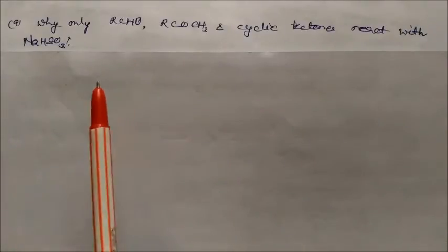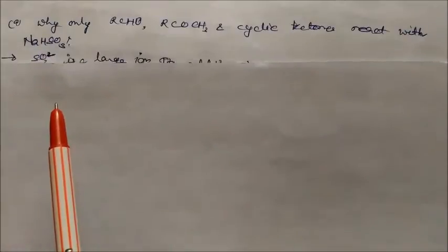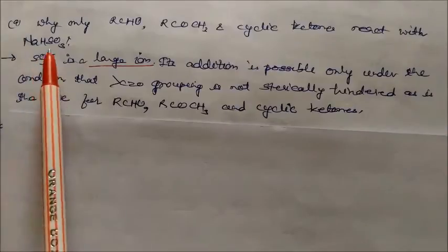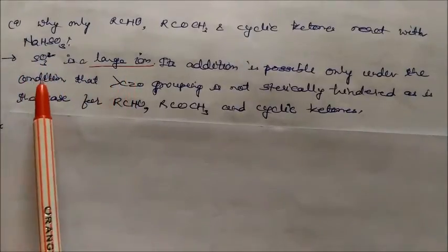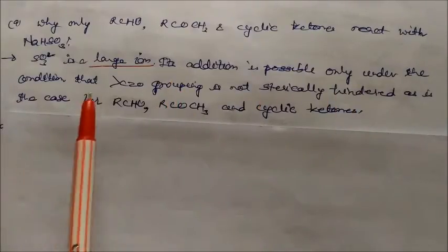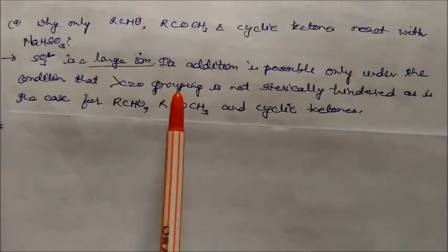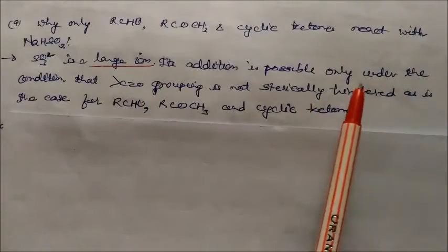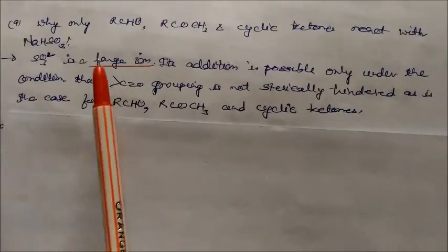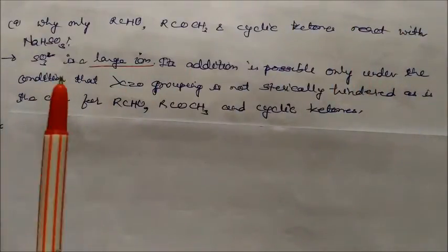Why do only aldehydes, methyl ketones, or cyclic ketones react with sodium bisulfite? The bisulfite ion (HSO₃⁻) is a large ion, and its addition is possible only when the ketonic group is not sterically hindered. In the case of aldehydes, methyl ketones, and cyclic ketones, the carbonyl group is not sterically hindered, which is why they react readily with sodium bisulfite.